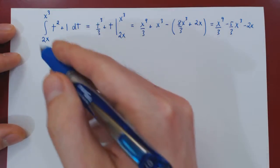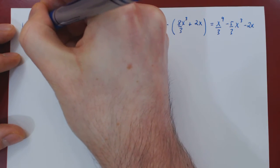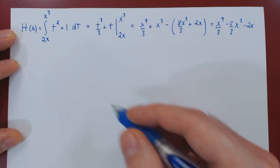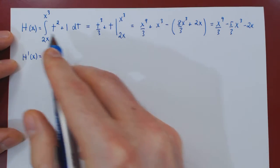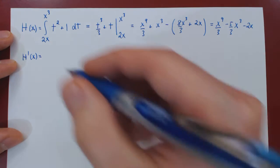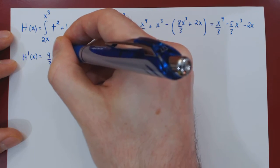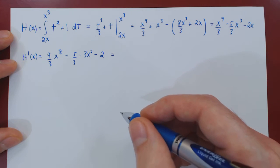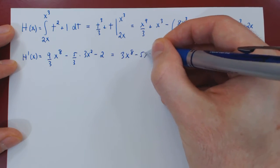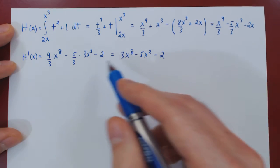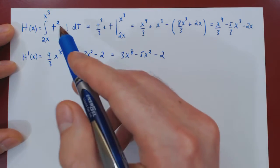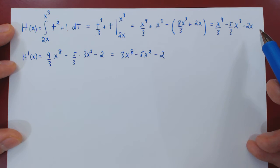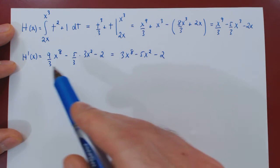Since we have a function of x, we can give it a simpler-looking name — call it h(x). Now we have a function of x, so we can ask: what is its derivative? h′(x), differentiating the result using the power rule, gives 9/3 · x⁸ − 5/3 · 3x² − 2, which simplifies to 3x⁸ − 5x² − 2. A very simple differentiation problem.